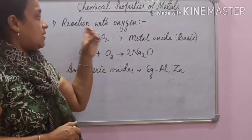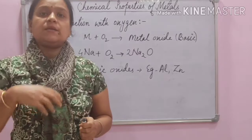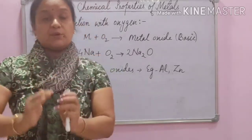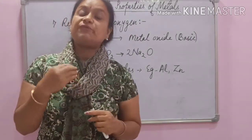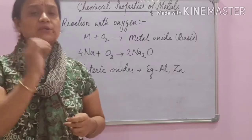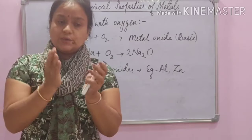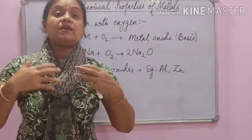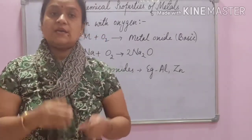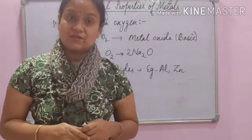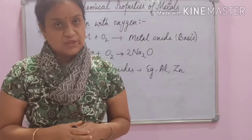Let us talk about the rate of reaction of metals with oxygen. Metals react with oxygen, but depending upon their reactivity or their position in the reactivity series, different metals show different rates of reaction. For example, sodium and potassium are highly reactive — they are at the top of the reactivity series. When left in open air, they directly catch fire. That is why sodium and potassium are stored in kerosene; they cannot be allowed to come in contact with oxygen.